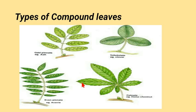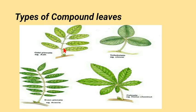We also have odd pinnate compound leaves, where the leaflets are odd in number. For example, three leaflets on one side and three on the other makes six, plus one at the apex makes seven total — an example is the ash plant. Then we have even pinnate compound leaves, where there are an even number of leaflets on either side — six on each side making twelve. Acacia has even pinnate compound leaves.